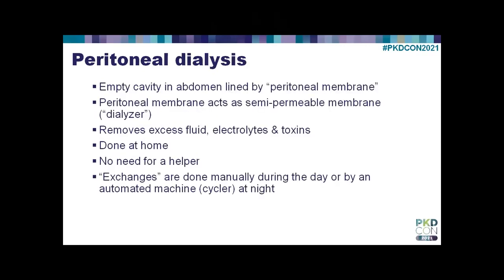The other major type of dialysis is peritoneal dialysis. The reason it's called peritoneal dialysis is there is an empty cavity in your abdomen called the peritoneal cavity, lined by a peritoneal membrane. This peritoneal membrane acts as the semipermeable membrane needed to do dialysis. Once again, it allows us to remove excess fluid, electrolytes and toxins, and it's done at home—there's no need for a helper. You exchange fluid: you put clean fluid in your abdomen for a period of time, waste products and excess fluid move into your abdominal cavity, you throw away the dirty fluid, and then you do it all over again.